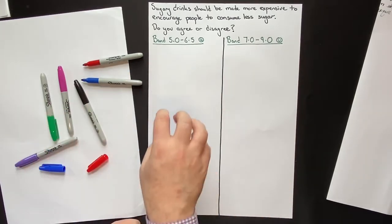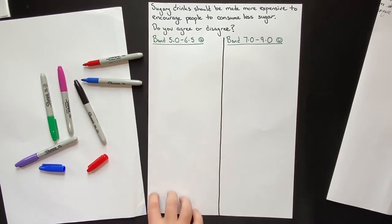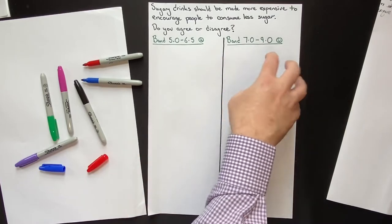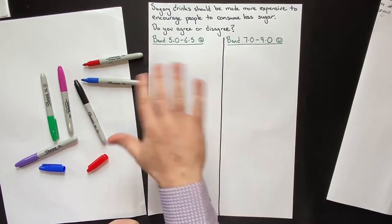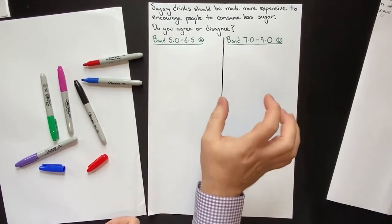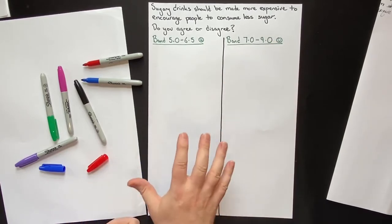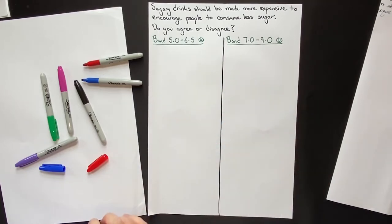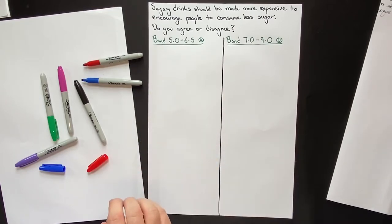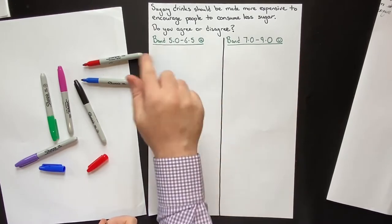In this video I'm going to show you what a Band 5 to 6.5 essay looks like in comparison to a Band 7, 8, or 9 essay, because there are some very simple things you can learn. Students we work with who get a Band 8 or 9 are doing simple things that we teach them, and there are also things you need to avoid. At IELTS Advantage, we teach you not only how to do the right things, but how to avoid what leads to lower scores.